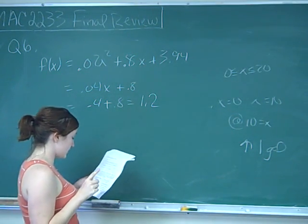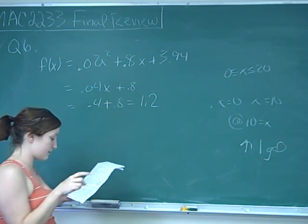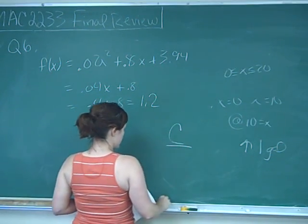We are increasing by 1 gallon per person for the average rate of change, and at 10 years we're increasing by 1.2 gallons per person. That's letter choice C.